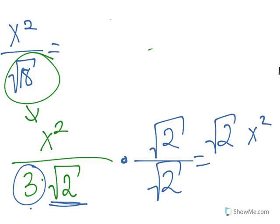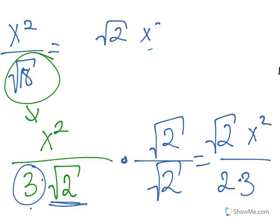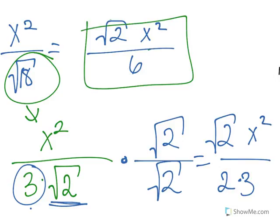Some people may just cancel this out, but that is not right. Remember that square root of 2 times square root of 2 is actually 2, and 2 times 3 is 6, so we get square root of 2 times x squared over 6 — which is the same answer we got before.